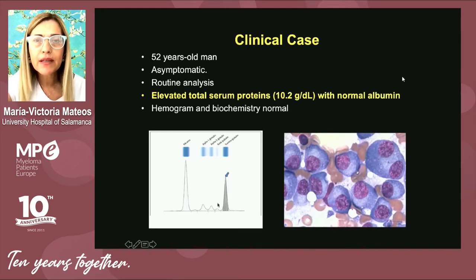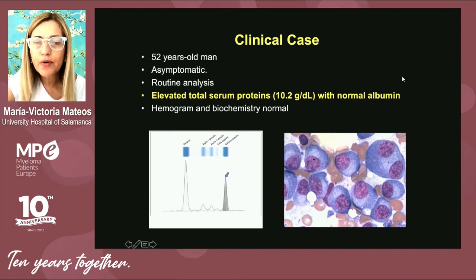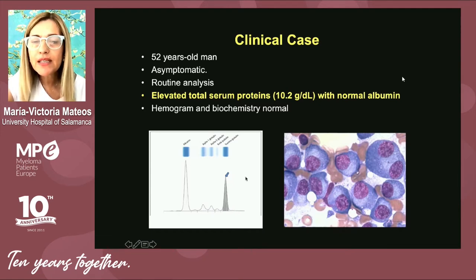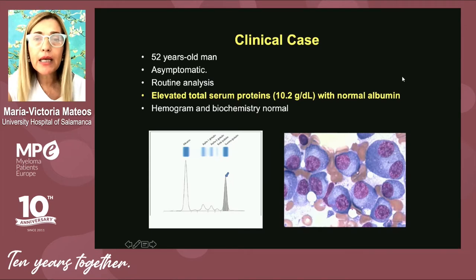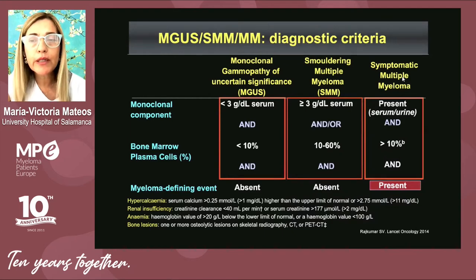The next step is to go to the bone marrow, because it is in the bone marrow where the plasma cells are produced. These plasma cells are responsible for the production of this monoclonal component. Considering these two features — plasma cells proliferating in the bone marrow together with the M component — we are able to make the diagnosis of monoclonal hemopathy, smoldering myeloma, or multiple myeloma.